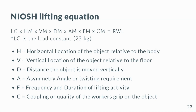The NIOSH Lifting Equation is a tool used to evaluate the level of risk associated with manual material handling tasks, specifically those involving lifting, lowering, and carrying loads. It is used to calculate a recommended weight limit (RWL) for a given task based on a variety of factors, such as the weight of the load, the distance it is being moved, the height of the lift, and the frequency of the task. The NIOSH Lifting Equation takes into account six factors.